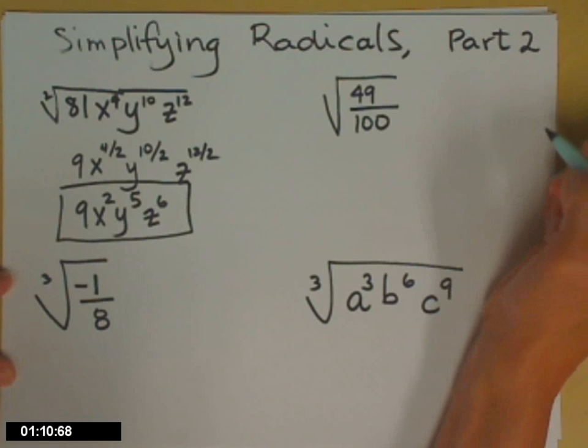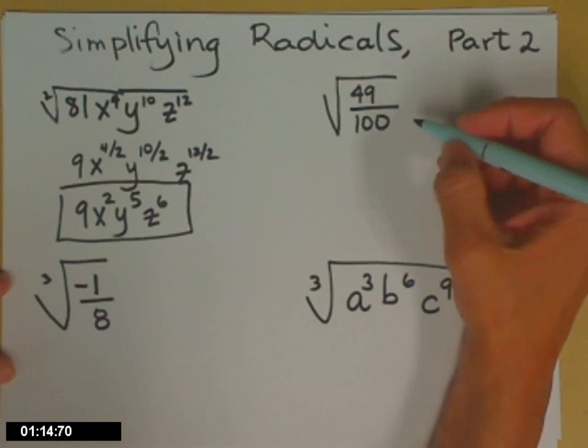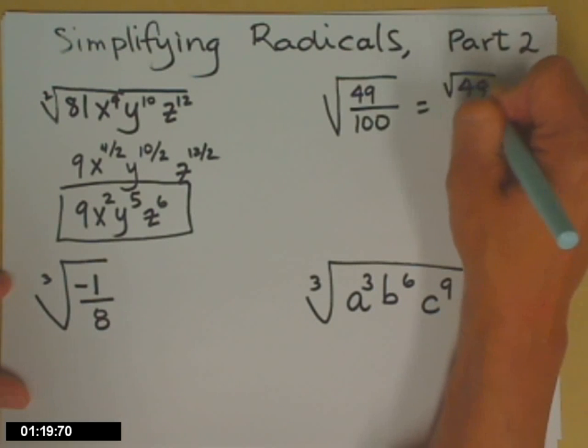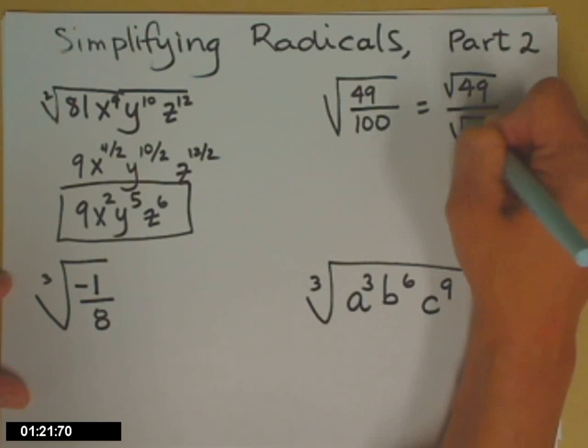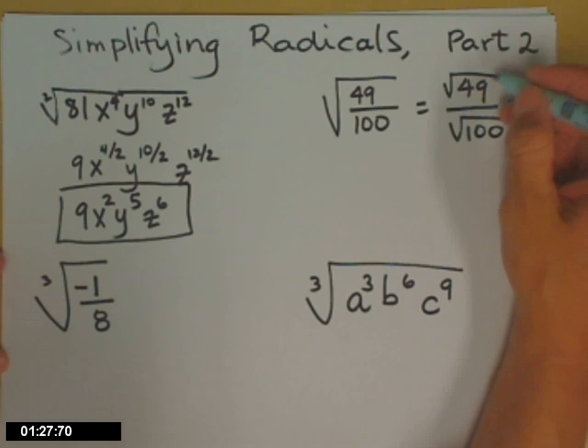I wanted to give you an example with a fraction. So this time I have the square root of 49 one-hundredths. With fractions, if you want, you can break that up into two different radicals, one for the top and one for the bottom, and then just simplify each piece. So the square root of 49 is 7 and the square root of 100 is 10.